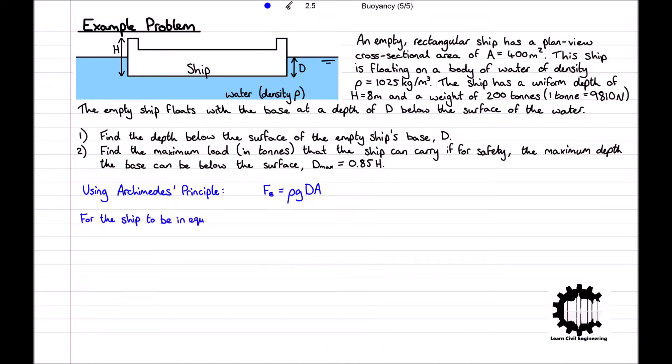For the ship to float in equilibrium, Fb must equal w, and we can assume that Fb and w have the same vertical line of action due to the symmetrical nature of the ship. Therefore, ρgdA = w.